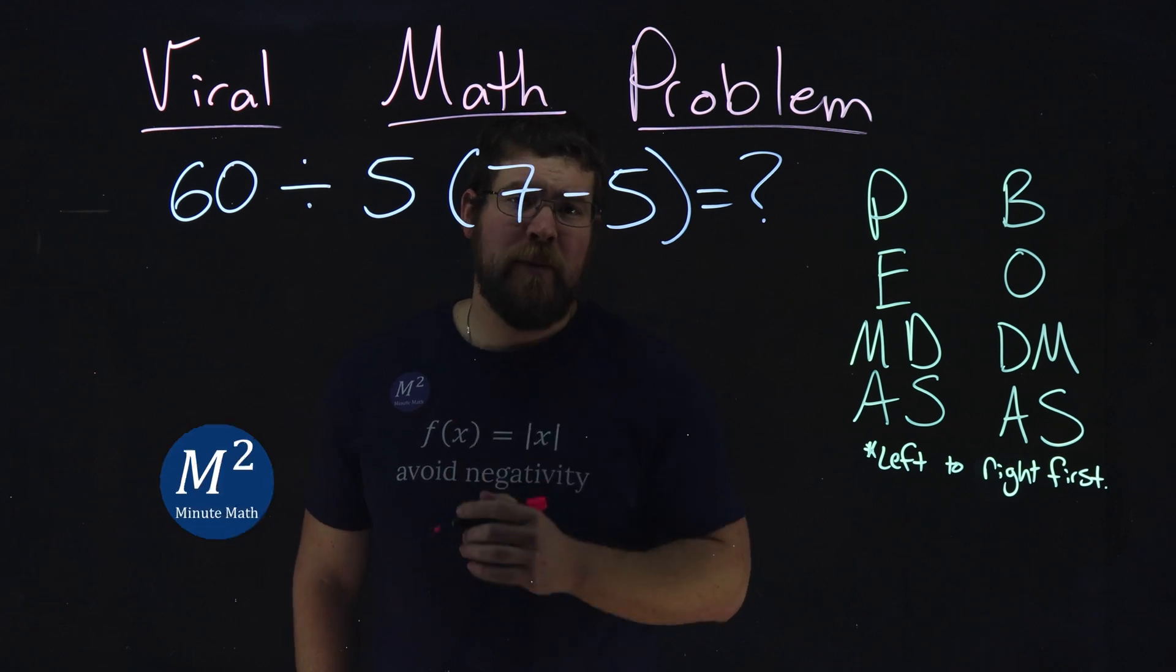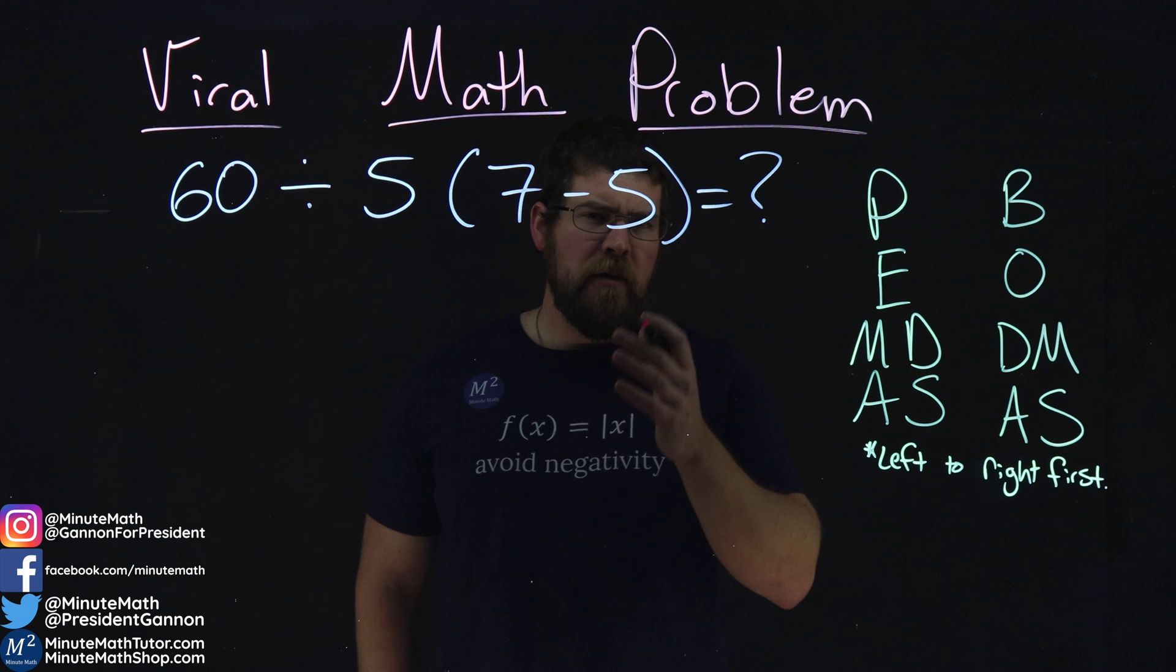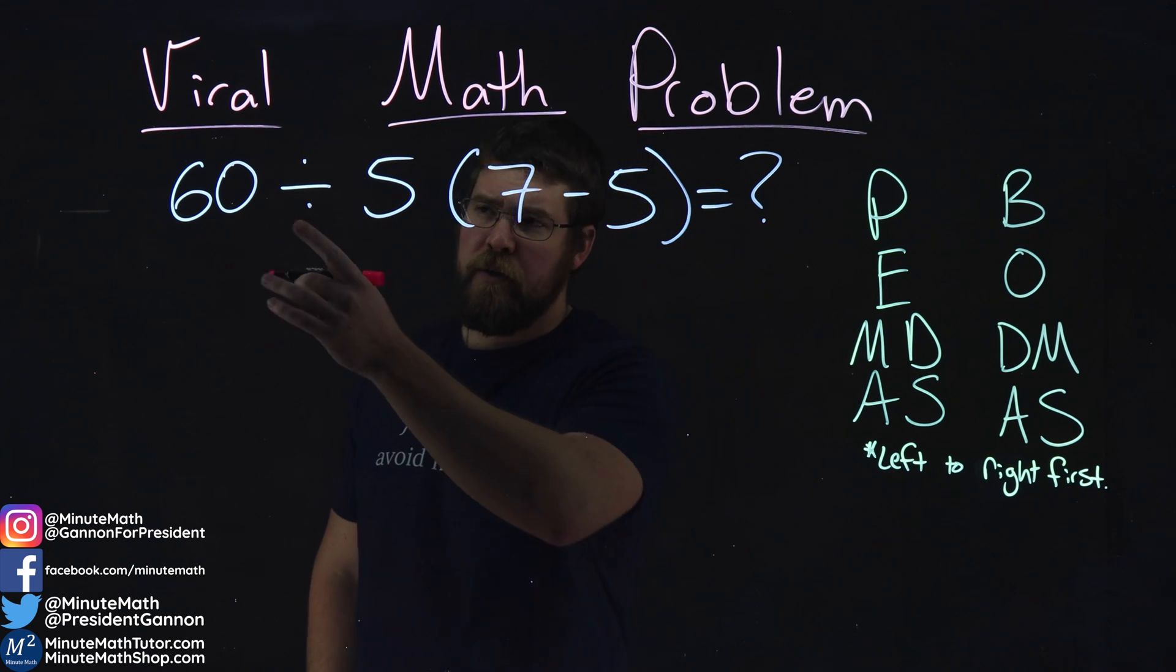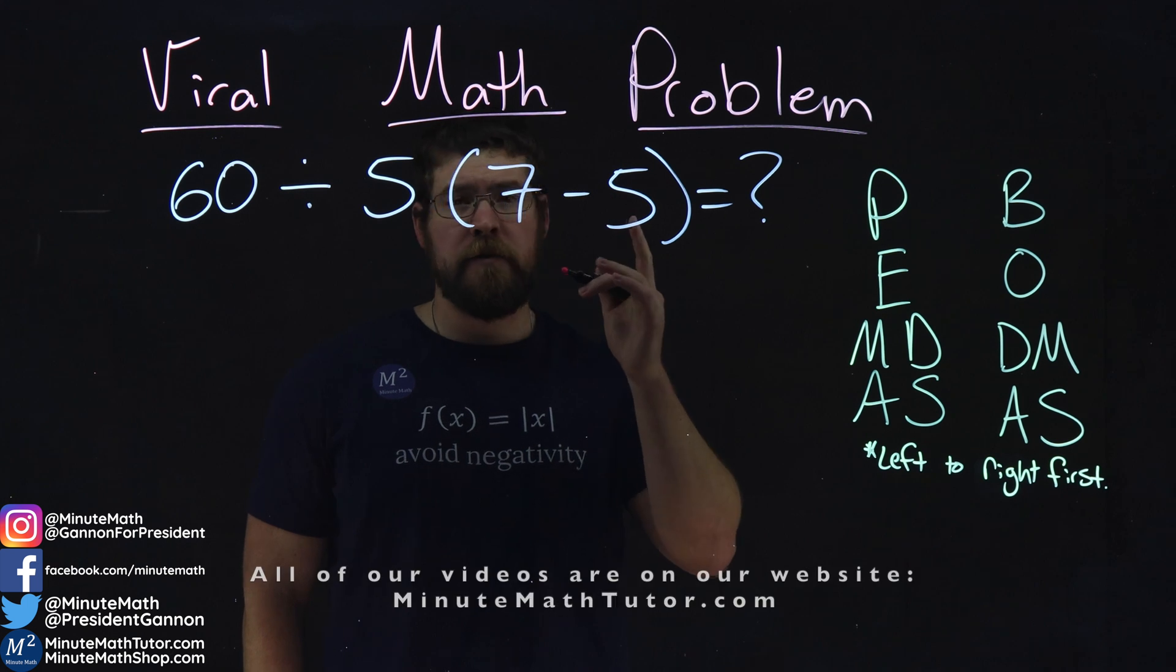Hi, I'm Sean Gannon, and this is MinuteMath, and we have the Viral Math Problem. This problem is as follows: 60 divided by 5 times the quantity of 7 minus 5.